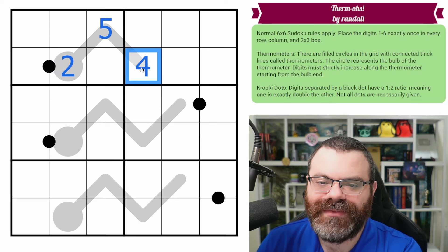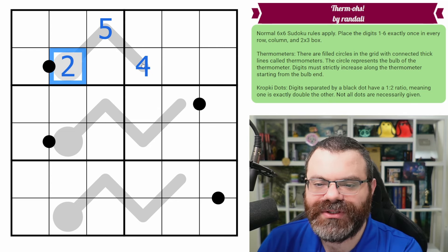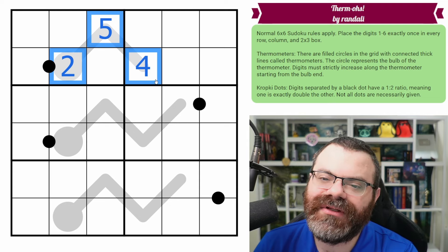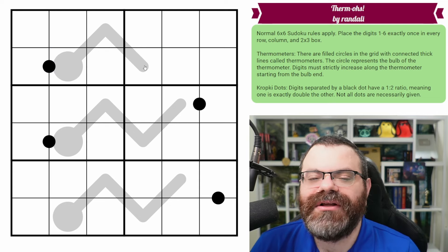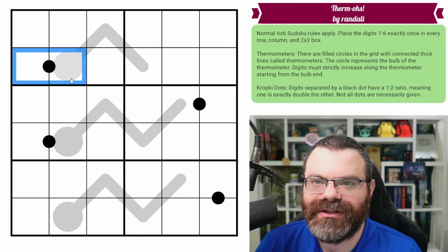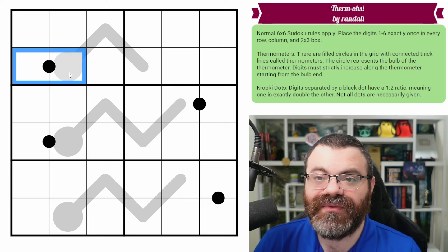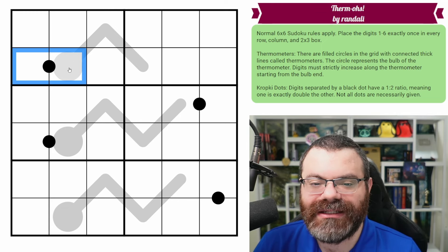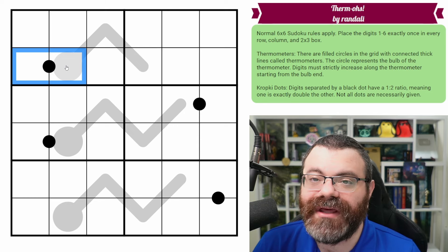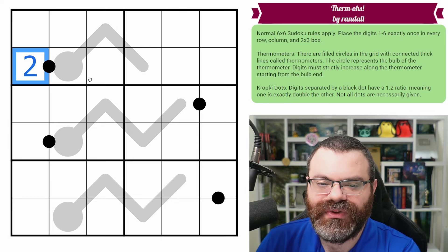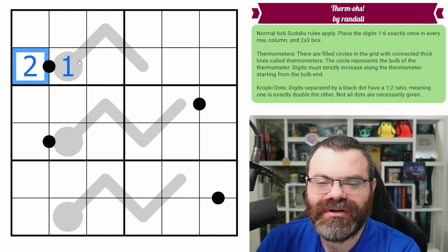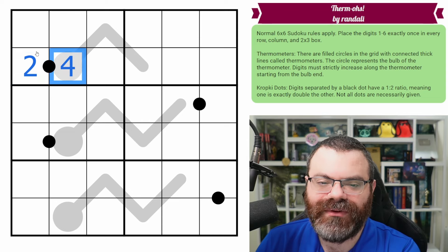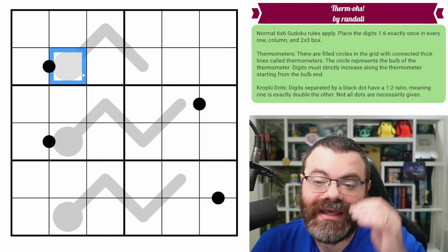We can't do two, five, four, because four is not bigger than five. Even though four is bigger than two, we have to keep getting bigger as we move along. And then we also have these black dots on the grid. These are kropki dots, specifically the ratio ones. Digits separated by a black dot have a one to two ratio, meaning one of them is exactly double the other. So if this was a two, this could be one because two is double one, or it could be a four because four is double two.